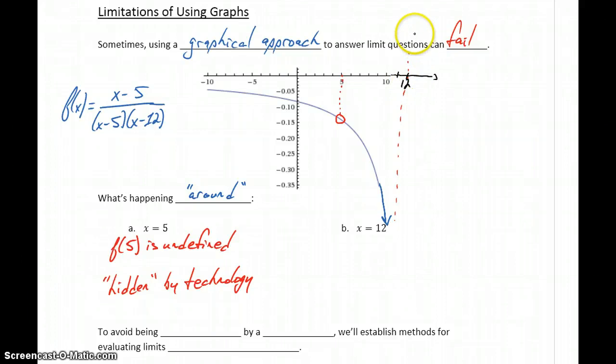But then on the other side of that asymptote, we would have a curve that looks more or less like that.